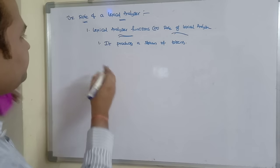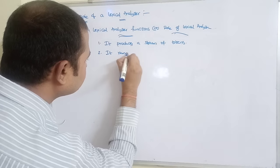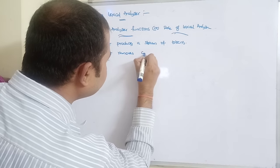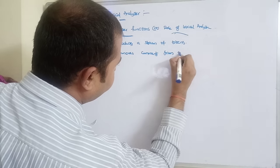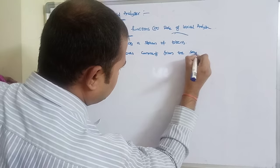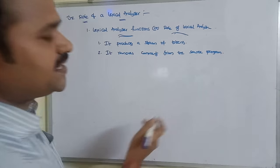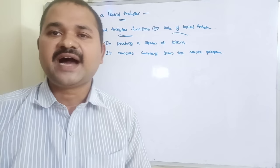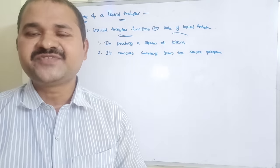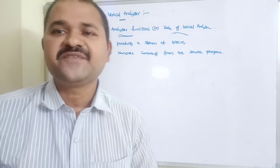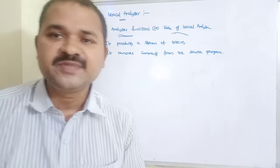Tokens may also include arithmetic operators, relational operators, logical operators, or special characters like semicolons and commas. The second function of the lexical analyzer is that it removes comments from the source program, since comments are only for understanding purposes and are never compiled or executed.